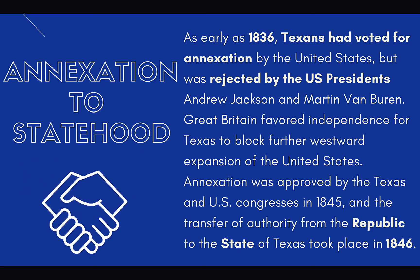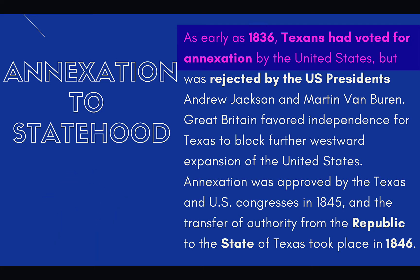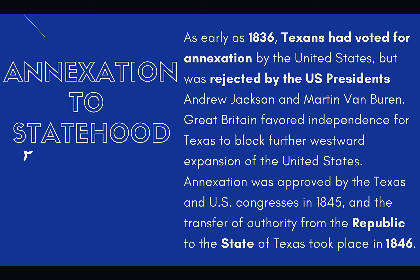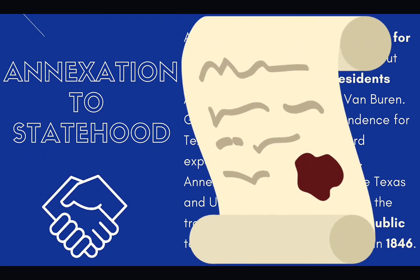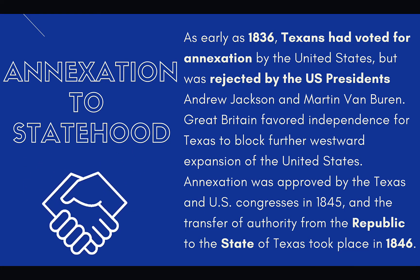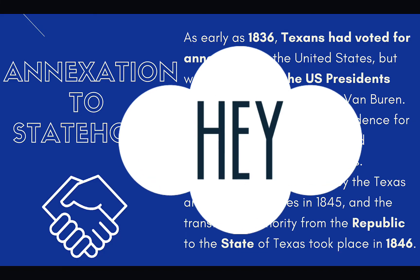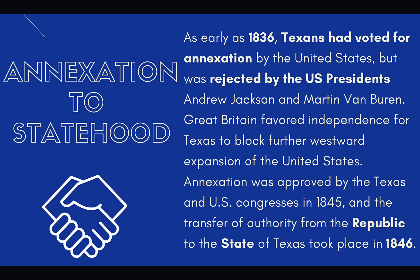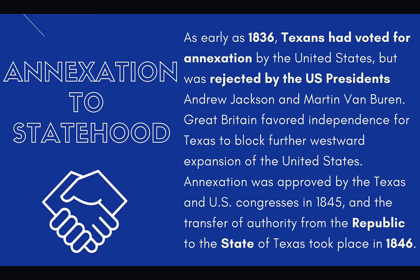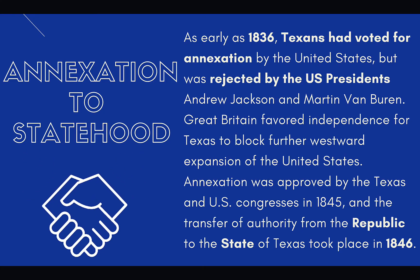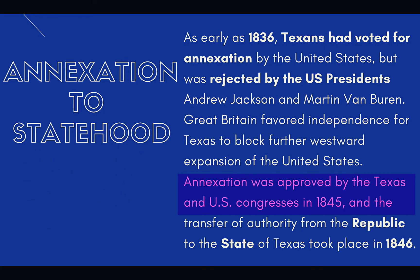As early as 1836, Texans had voted for annexation. Yes — 1836 was when Texas became its own independent country free from Mexico, but Texans also wanted to become part of the United States at that time. Presidents Andrew Jackson and Martin Van Buren both rejected that idea. Great Britain actually favored Texas independence because if Texas remained its own country, it would block the United States from expanding westward.